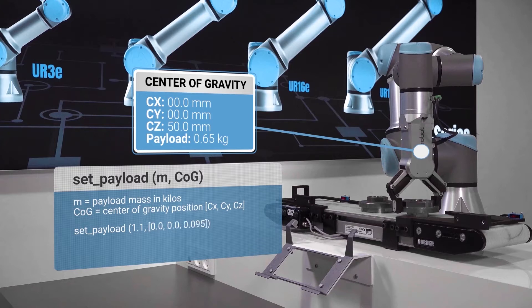The distance is measured from the center of the tool flange and written in meters. Here you have a script command that sets the payload to 1.1 kilos and the center of gravity to 95 millimeters from the tool flange on the Z axis.